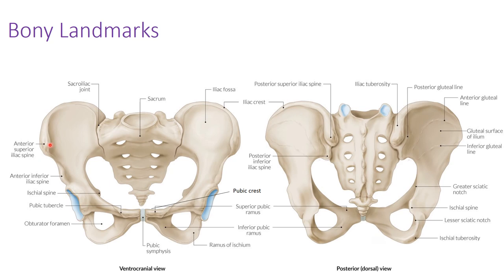You should remember the ASIS from when you were learning about the inguinal ligament, which runs from the ASIS down to the pubic tubercle. A little more inferiorly, we have the anterior inferior iliac spine, or AIIS. In the back is the ischial spine, and down here is the ischial tuberosity. Also important: the inferior pubic ramus and superior pubic ramus, where many adductor compartment muscles originate.